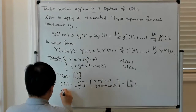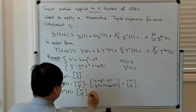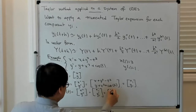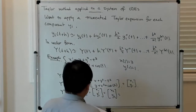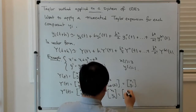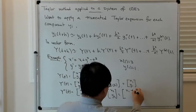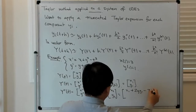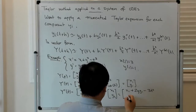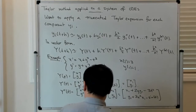Then Y″(t) is [x″, y″]ᵀ, which I'll also call [x1′, y1′]ᵀ or [x2, y2]ᵀ. Differentiating: x″ = x1 + 2y·y1 − 3t², and y″ = y1 + 3x²·x1 − sin(t).